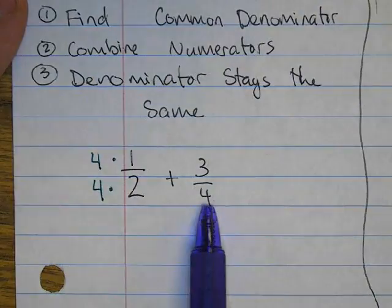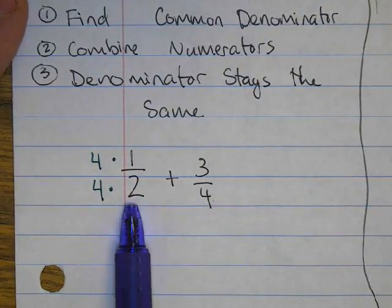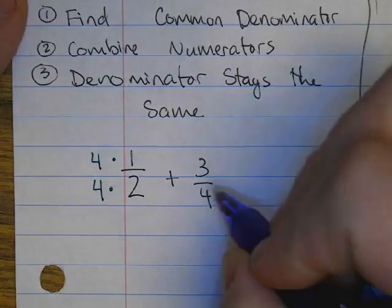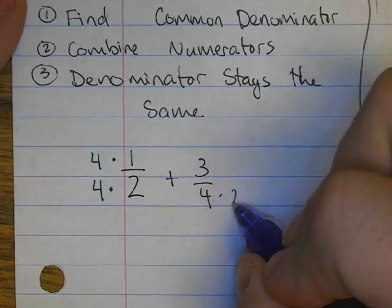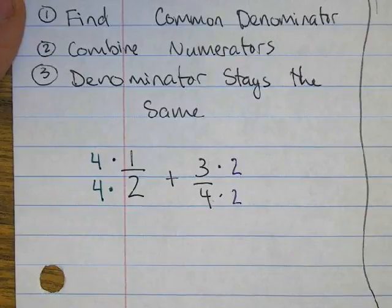On this fraction, since the denominator is four, I multiply by the other fraction's denominator, which is two, both bottom and top.